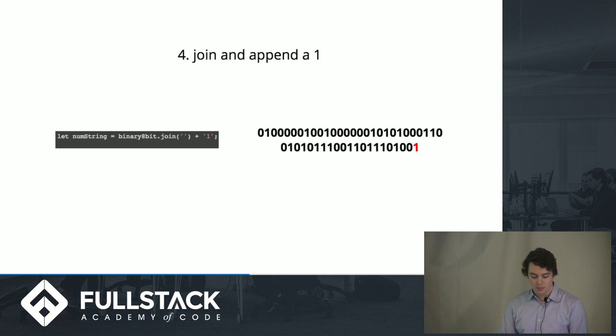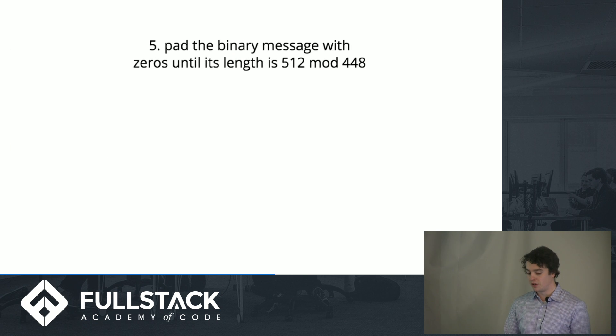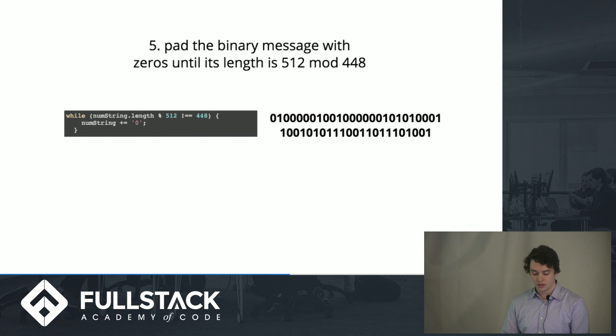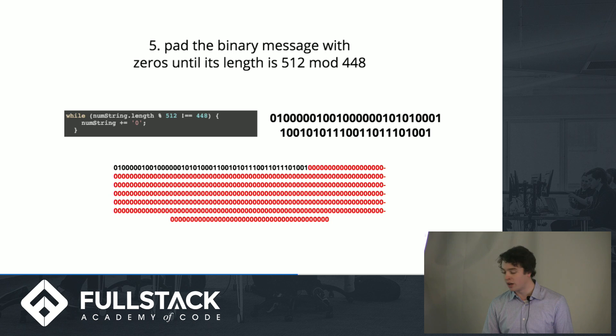Then you join them together and append a 1. Then you pad the binary message with 0s until its length is 512 mod 448. This is actually really important because these hash functions will always output this 40-digit value. No matter if you put in the entire text of the Bible or one letter, it will always output a value that is 40 characters in length. So you need to make sure it's divisible. We're doing this padding to make sure we can take this input and make it divisible by 512 so we can chunk it down and split it up in this uniform way no matter how big the input is.